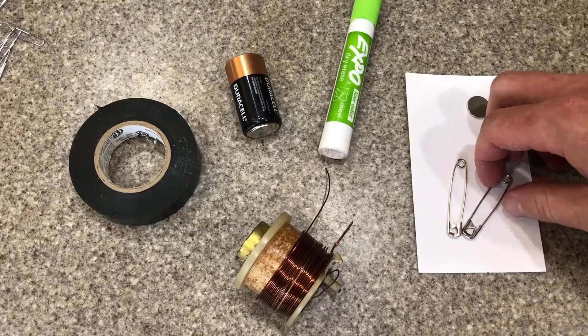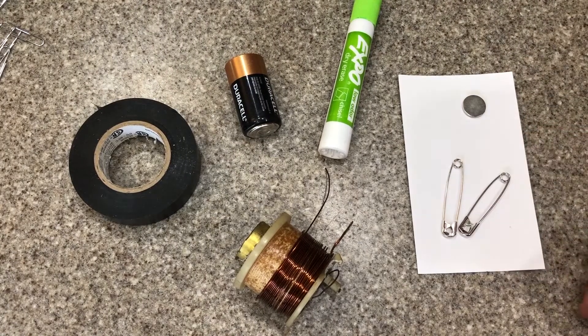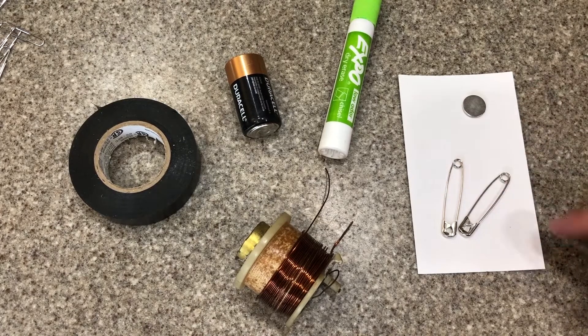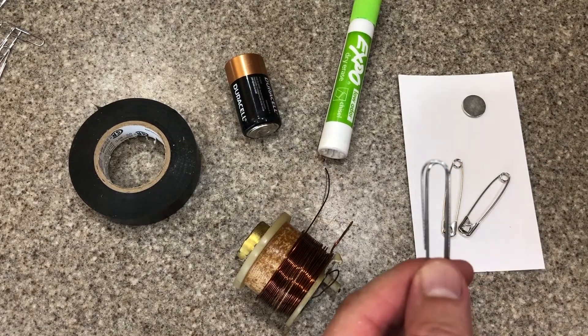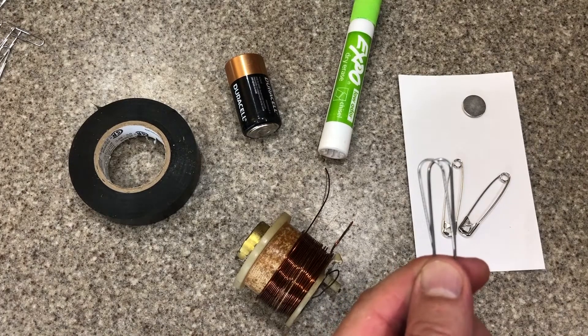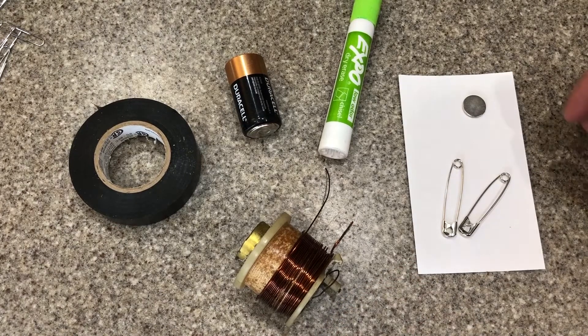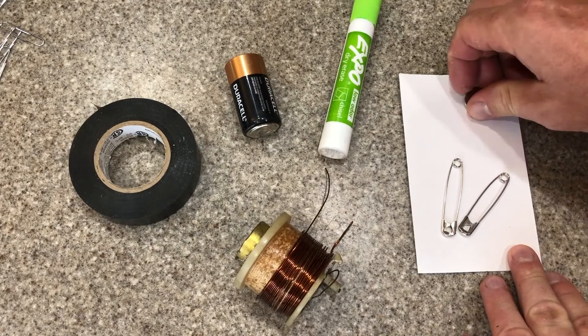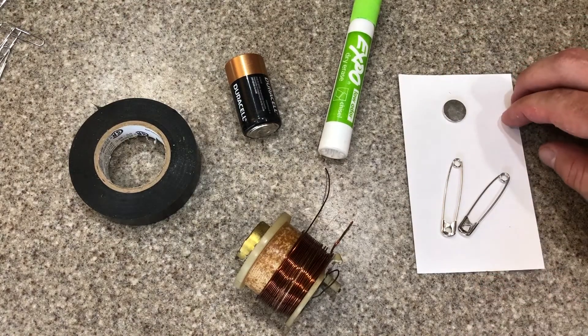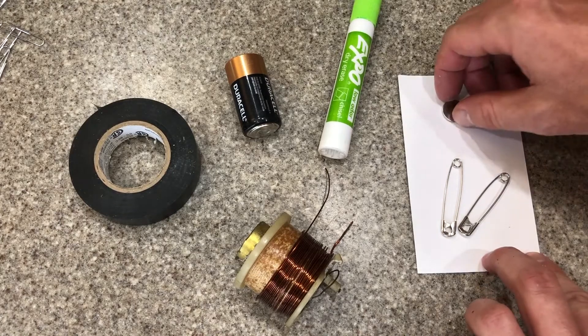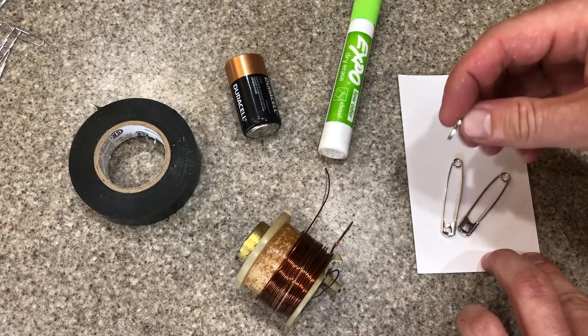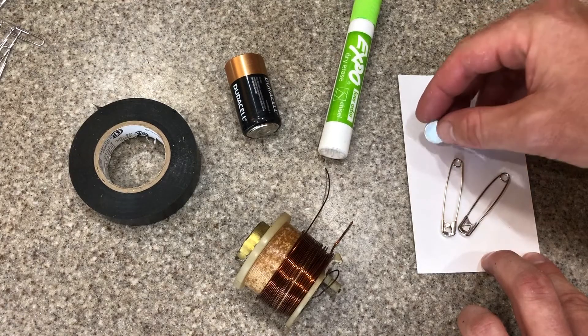We're going to start with two large safety pins. The important part is that it has a little area that the copper wire can spin in. If you don't have large safety pins, a large paper clip will do, but you'll have to bend it. You're going to need a small magnet, and that will sit on top of the battery. I just got this from the fridge. Any magnet that has two sides on it is preferable. One will attach to the battery, and the other will attach to the electric motor part.